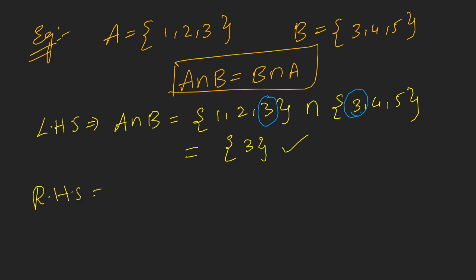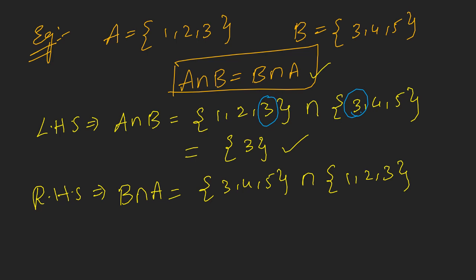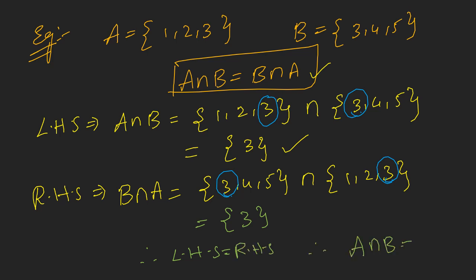Now the right-hand side is B intersection A: we take set B and intersect with set A. The common element is again 3, so B intersection A = {3}. The left-hand side equals the right-hand side, so A intersection B equals B intersection A. These are the two commutative laws, their proofs, and the examples. Thank you.